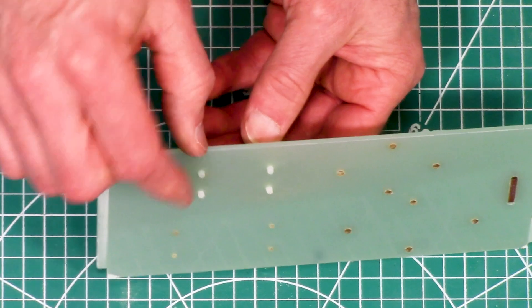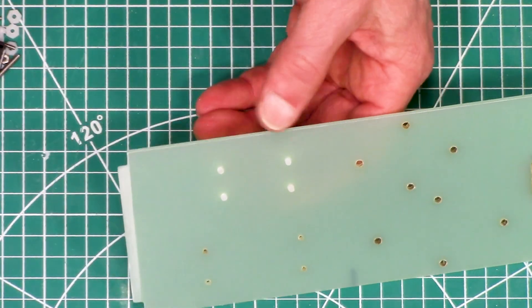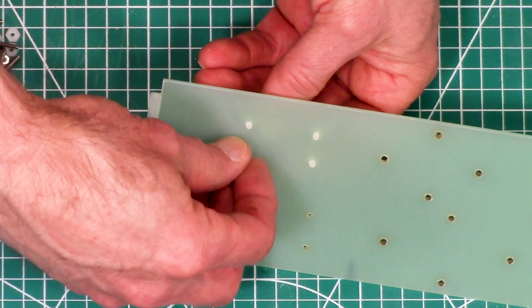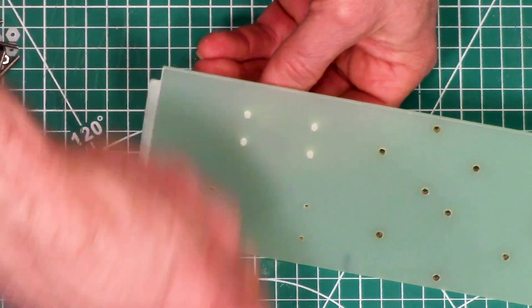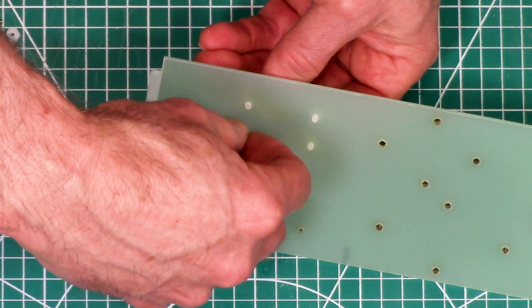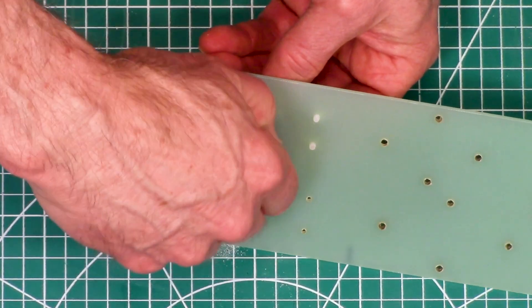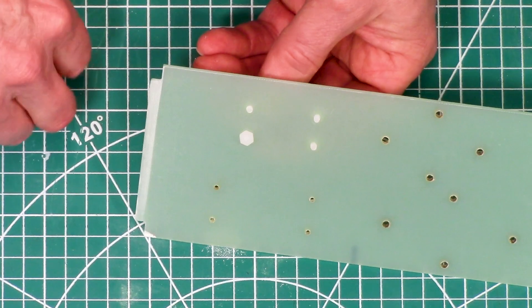They do protrude through on the backside. If you want you can put these little plastic nuts onto them. With the threads already on there you don't really need them, but it doesn't hurt to have them more secure.